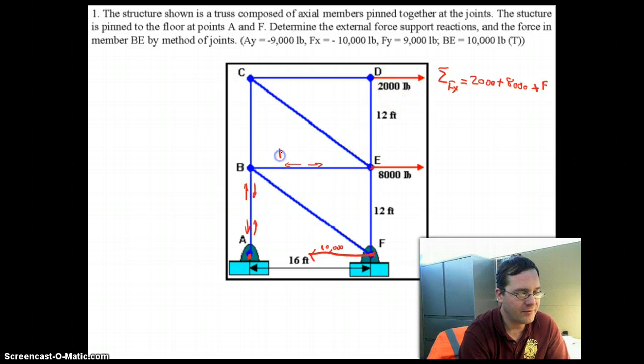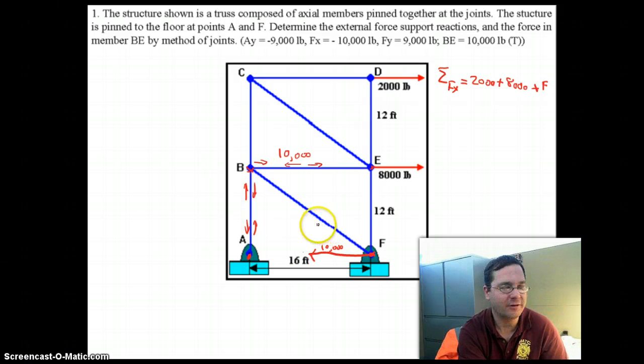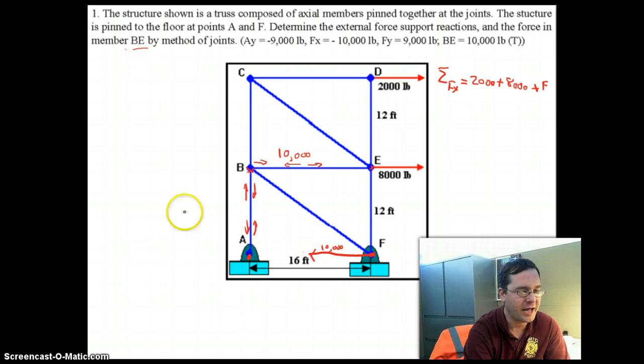So, what that means is that member BE has to be under 10,000 pounds tension, which makes some sense because if you think about going to joint B and pulling to the right with 10,000 pounds force and going to joint F and pushing to the left with 10,000 pounds force, you see that we get an equal and opposite reaction and things cancel out. So, that's the force in member BE.